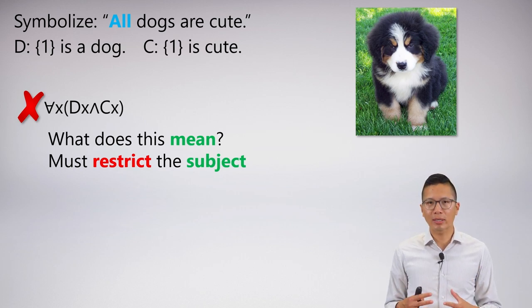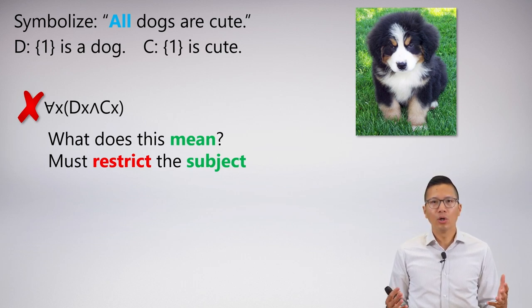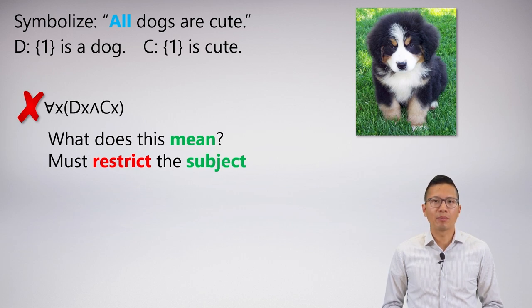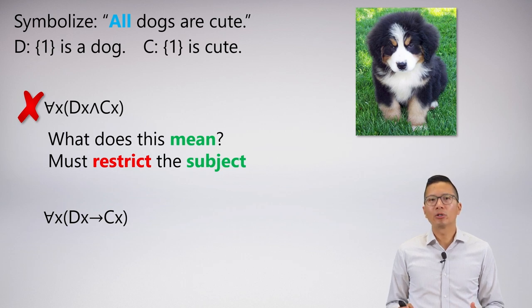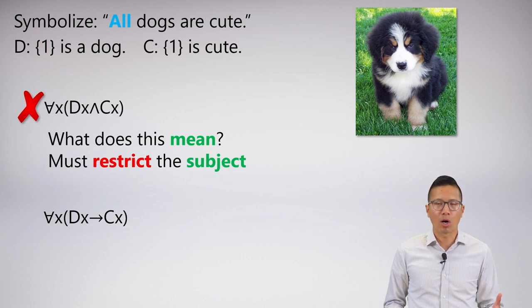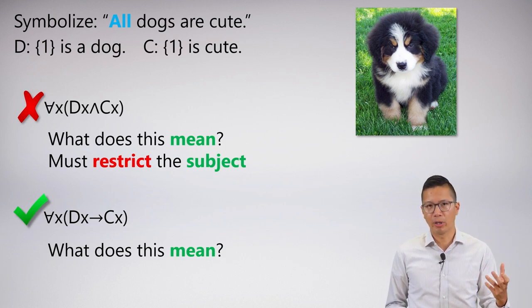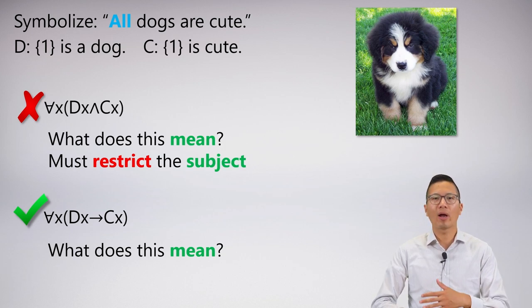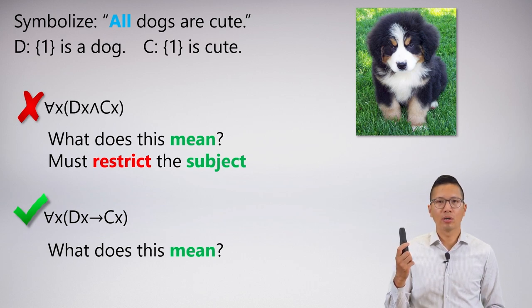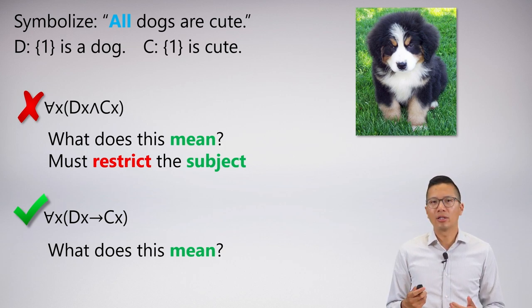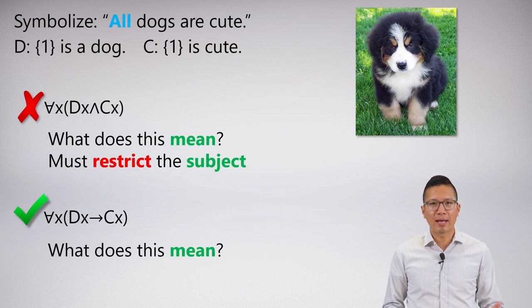What we need to do is somehow restrict the subject down, so I'm not talking about everything in the universe of discourse. When I say 'all dogs are cute,' I'm making a claim about everything that is a dog. So here's another attempt: 'for all x, Dx → Cx.' Instead of using a conjunction, we use the conditional to link my dog property with my cute property. Because it's a conditional, it says for everything in the universe of discourse, if that thing is a dog, then that thing is cute. If you're a dog, then you're cute — for everything in the universe of discourse. Is this clicker a dog? No. So 'for all x, Dx → Cx' doesn't apply to this clicker. It only applies to things that satisfy the antecedent — that is a dog — and then it says if you're a dog, you must have the property of being cute. That's how we symbolize 'all dogs are cute.'